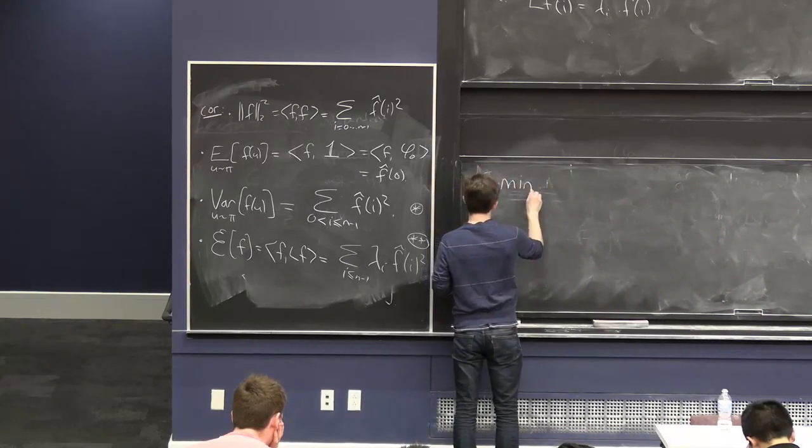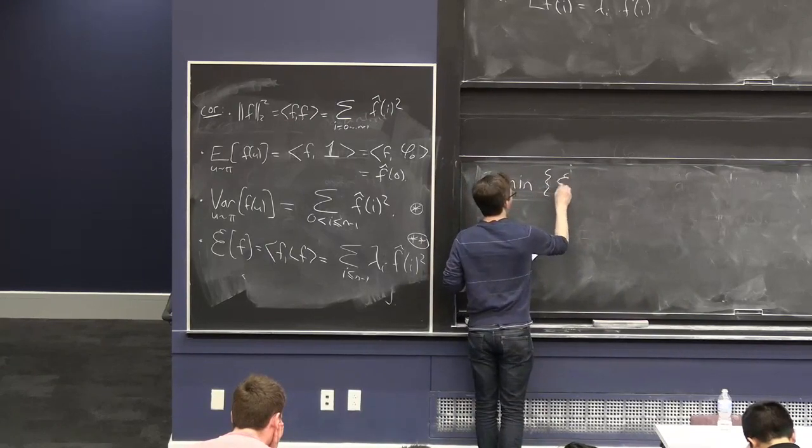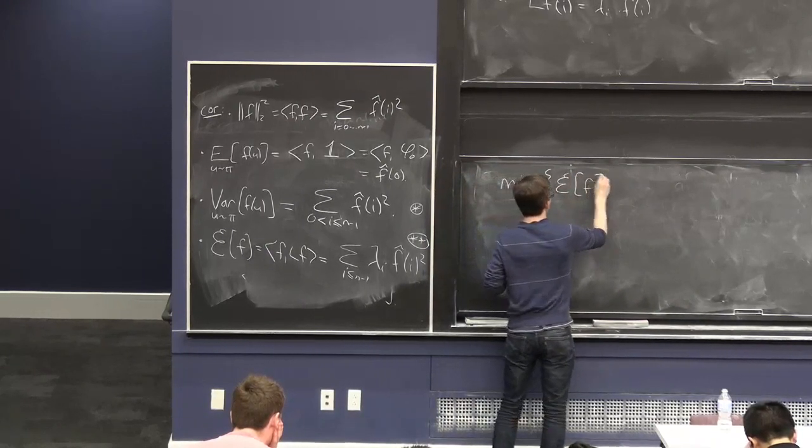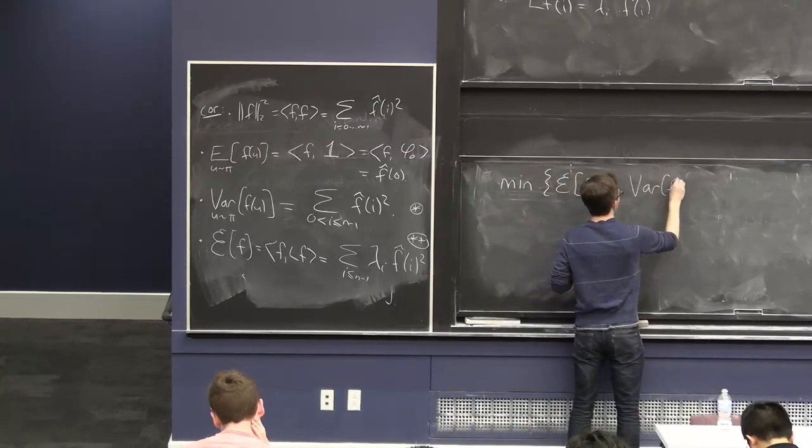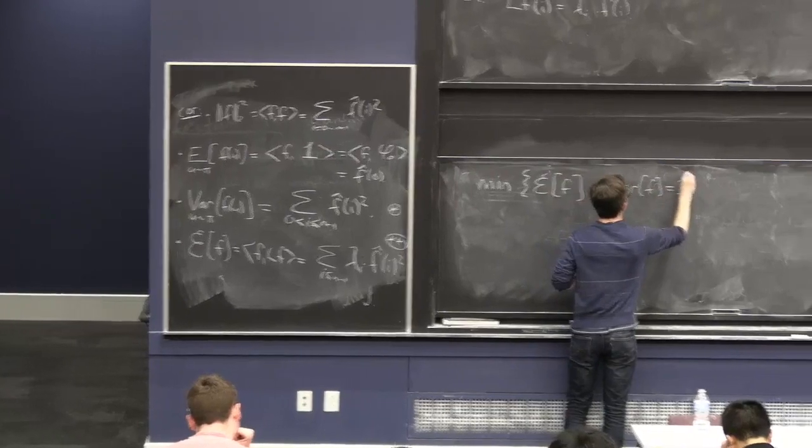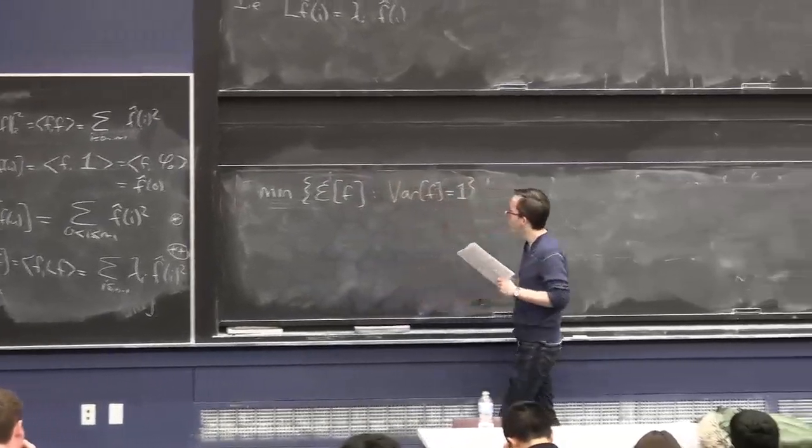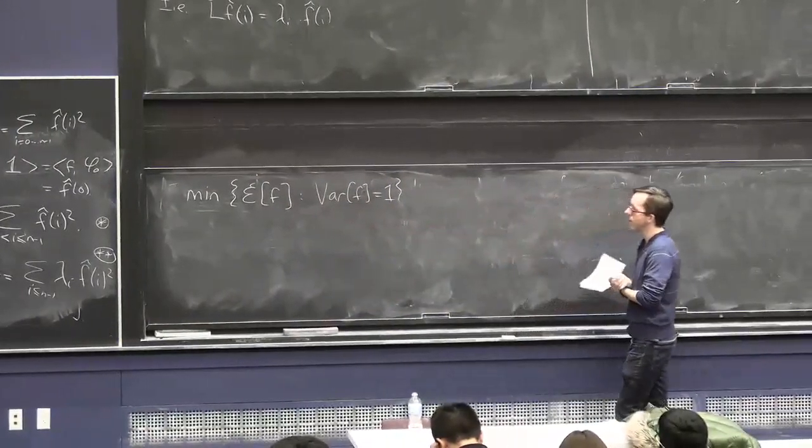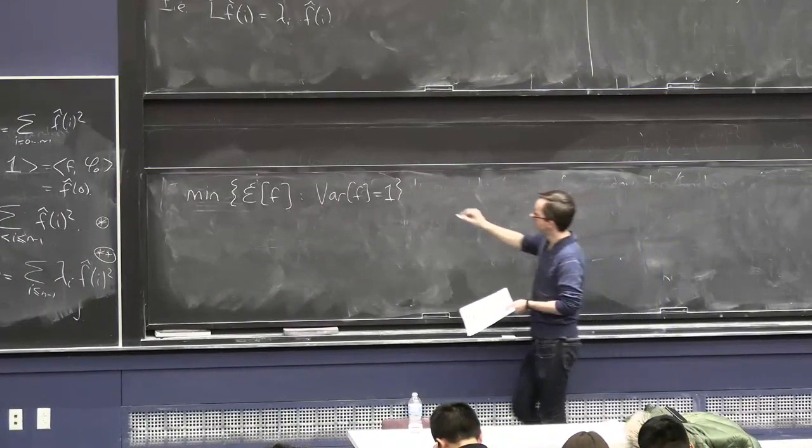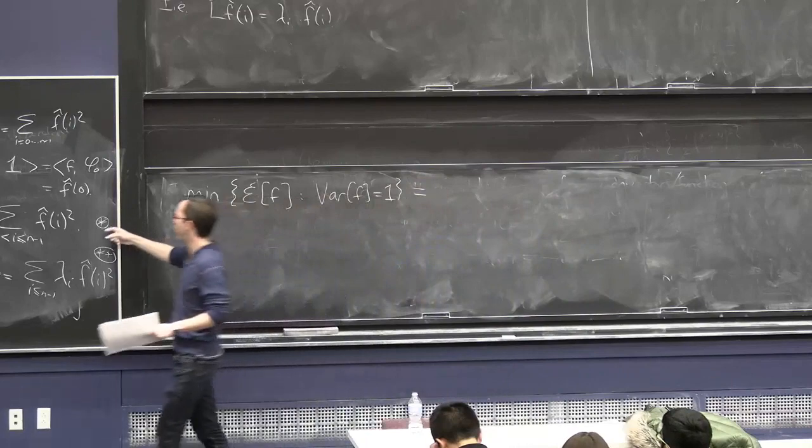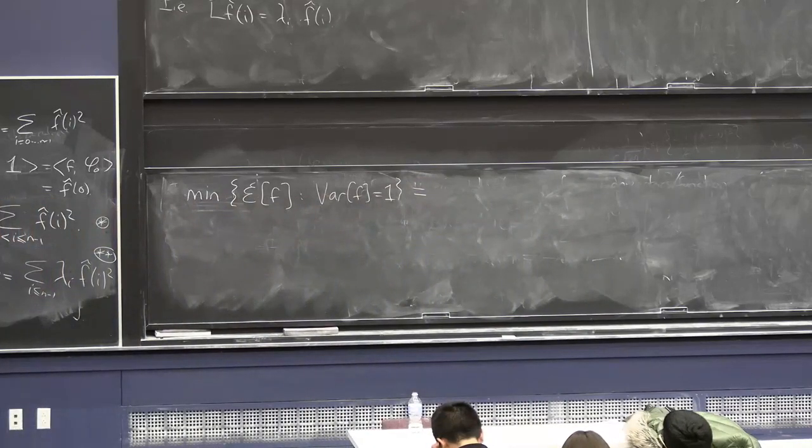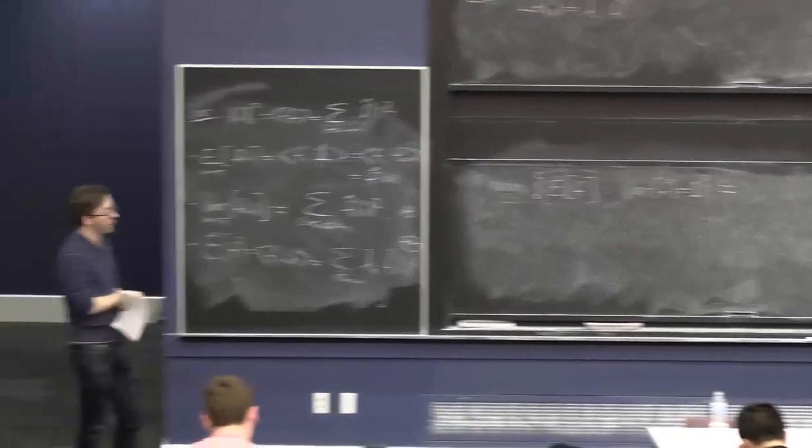Suppose we are interested in minimizing this quadratic form of f, subject to the condition that the variance of f is 1. And so, this is closely related to this conductance business. And I claim, by comparing these two formulas, you can easily figure out what this minimum is.